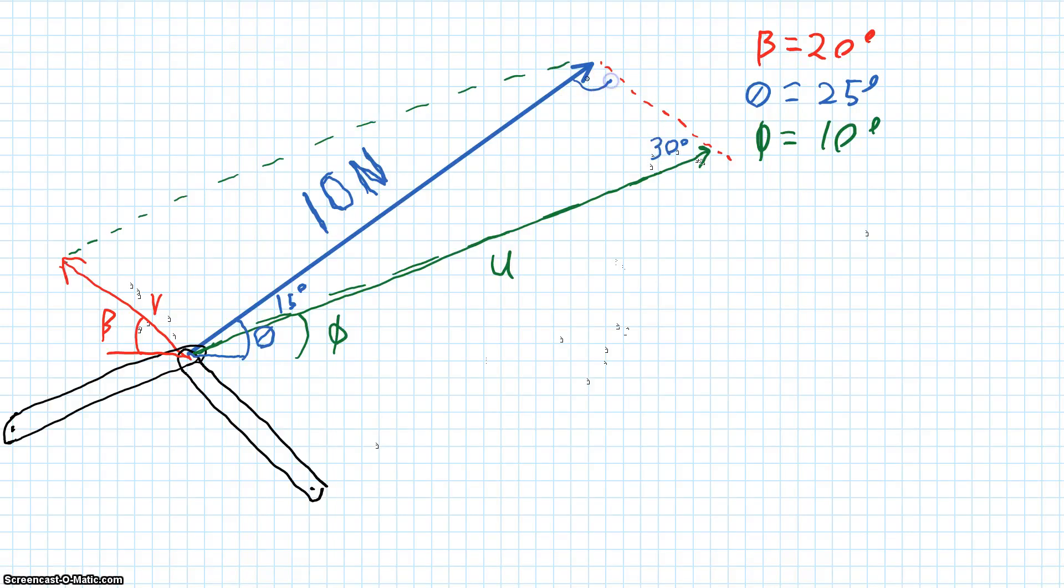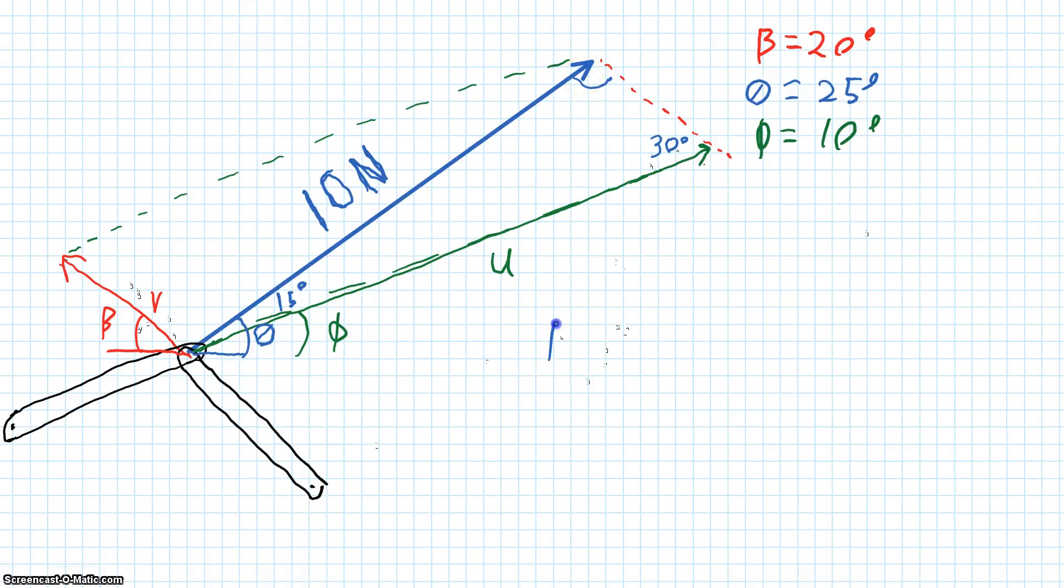We can solve for our last angle, this top angle. There's 180 degrees in a triangle. If we subtract the two known angles, 30 degrees and 15 degrees, we get that this top angle is going to be 135 degrees. Now that we have all the angles and we have one side, this is a great problem to use the law of sines on.